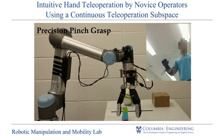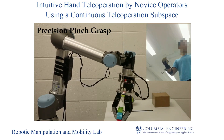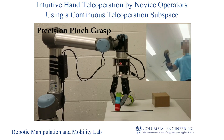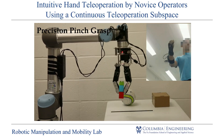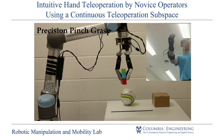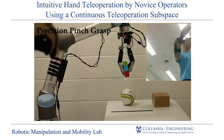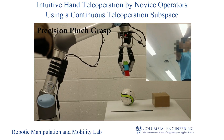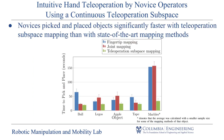Our method allows novice teleoperators to pick and place objects significantly faster than state-of-the-art teleoperation mapping methods. We compared our method against joint mapping and fingertip mapping, using time to complete a pick-and-place task as a metric for usability and intuitiveness. Thank you for your attention and we hope to see you at our interactive presentation.